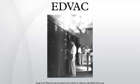A contract to build the new computer was signed in April 1946 with an initial budget of US$100,000. The contract named the device the Electronic Discrete Variable Automatic Calculator. The final cost of EDVAC, however, was similar to the ENIAC's, at just under $500,000.